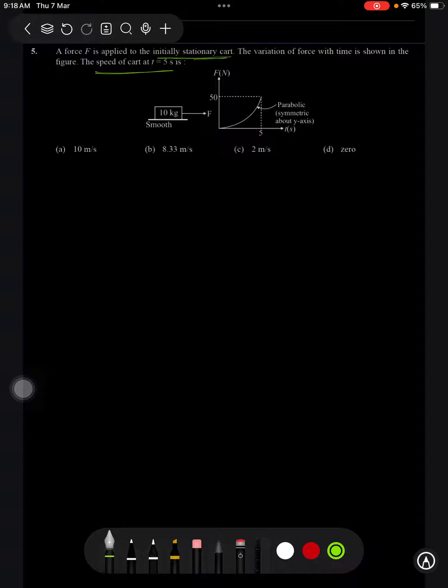Here you can see in the question they have given it is a parabolic curve symmetric about the y-axis. So I can use the equation f equals k times t squared. And this point on the parabola is 5 comma 50. I will use this point to find out the k value.